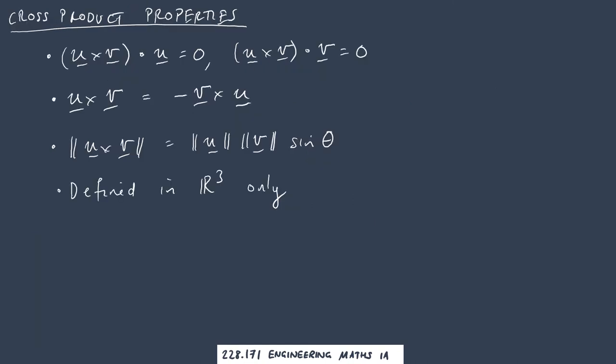Let's just quickly summarize some of the most important properties of the cross product. The first one is the one that we just checked, which is that the dot product of a cross product with either of the two vectors is equal to 0. That's the orthogonality one.